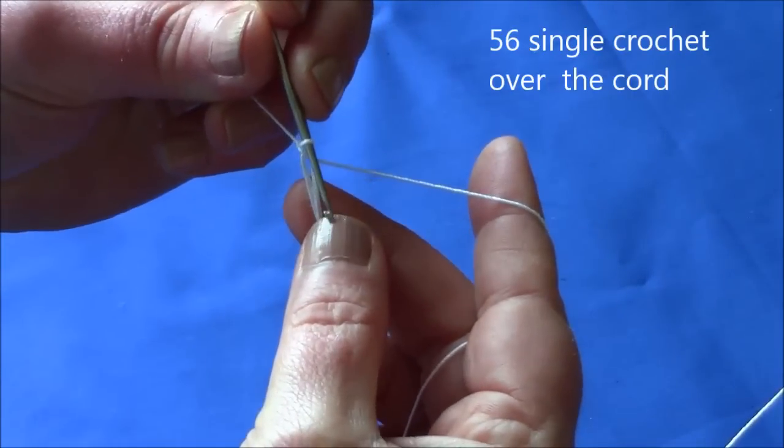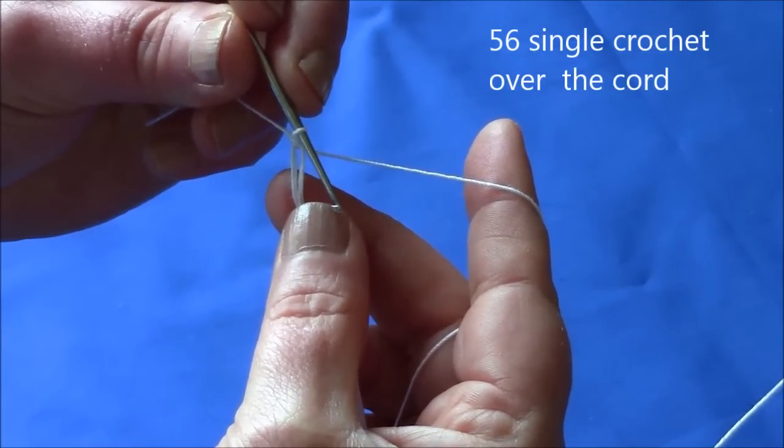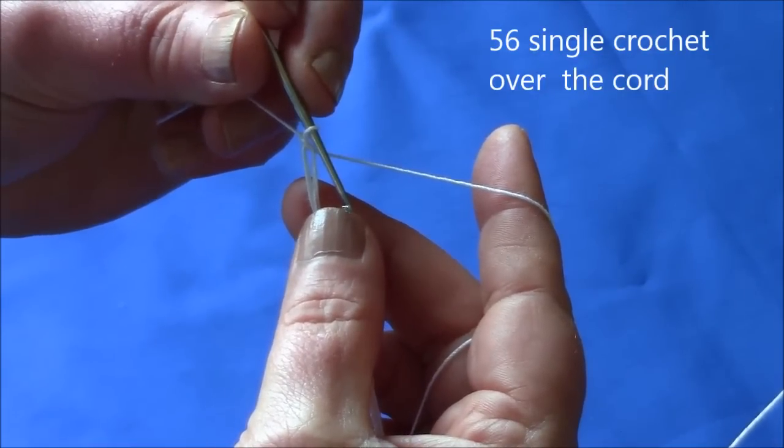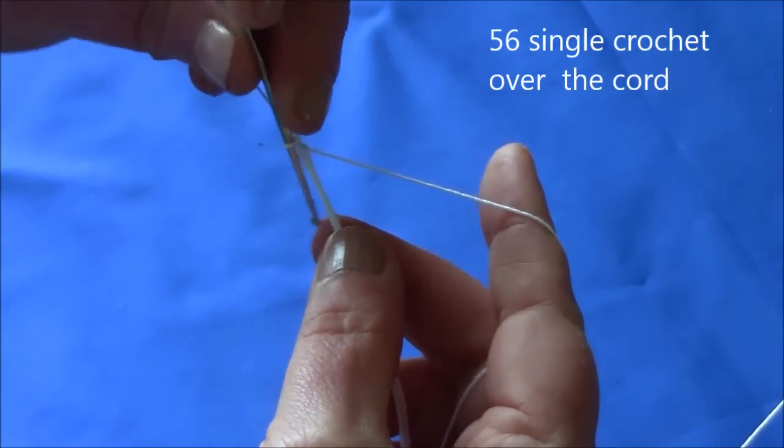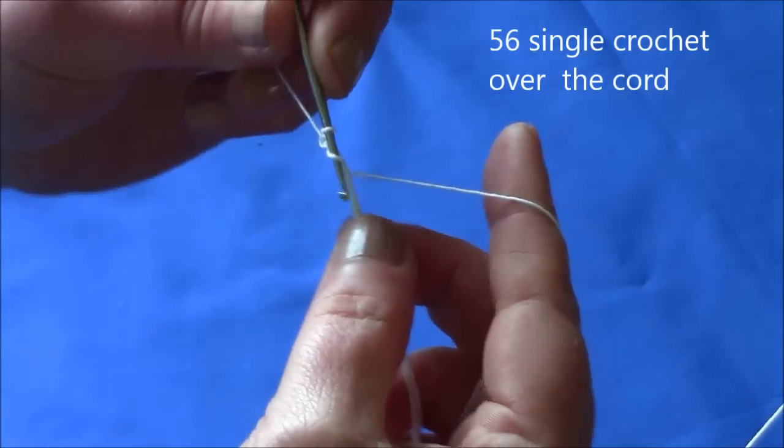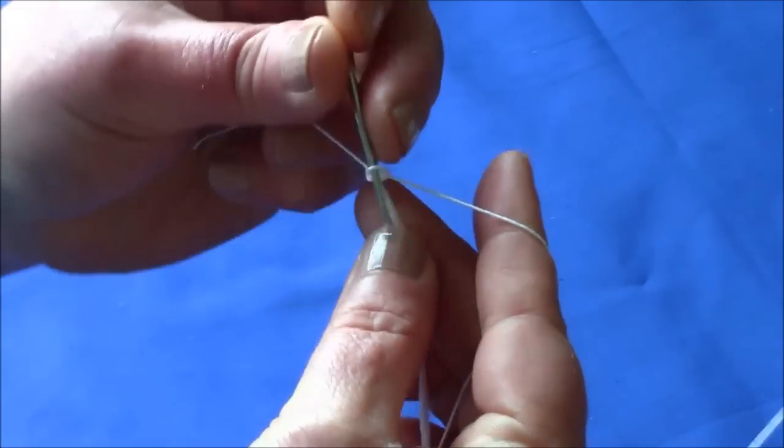Then do 56 single crochet over the cord. To make a stitch over the cord you hook under the cord and bring the thread over and make a single crochet.